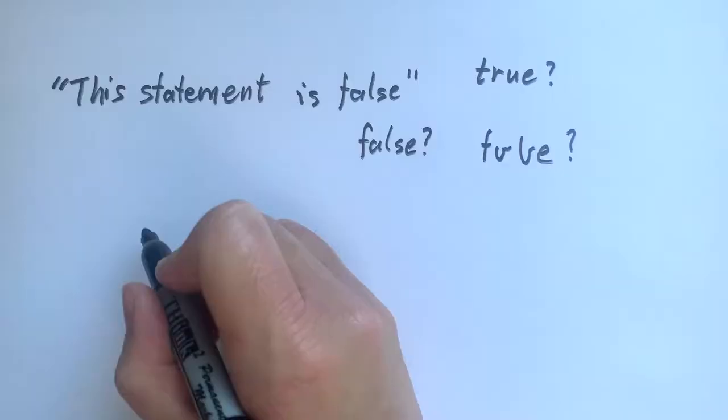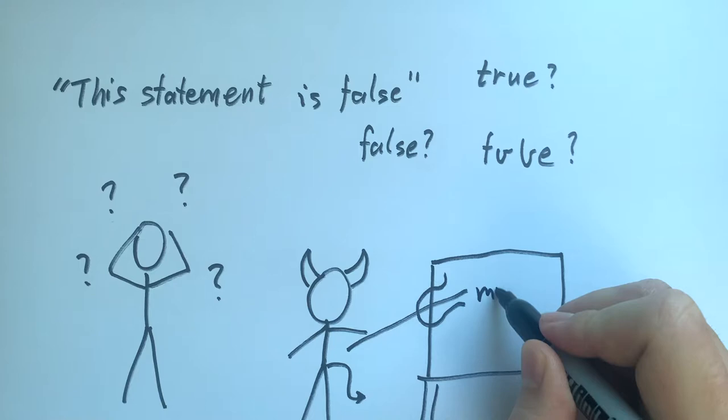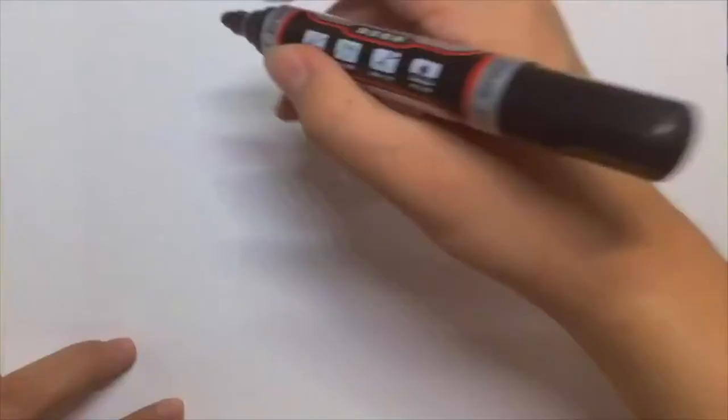How can this be? Has everything we learned been a lie? I knew my math teacher was evil. Turns out this conundrum is called the liar paradox. And today I will show you how to solve it.